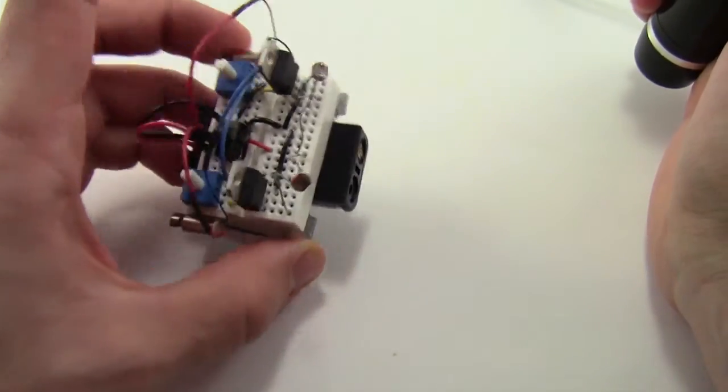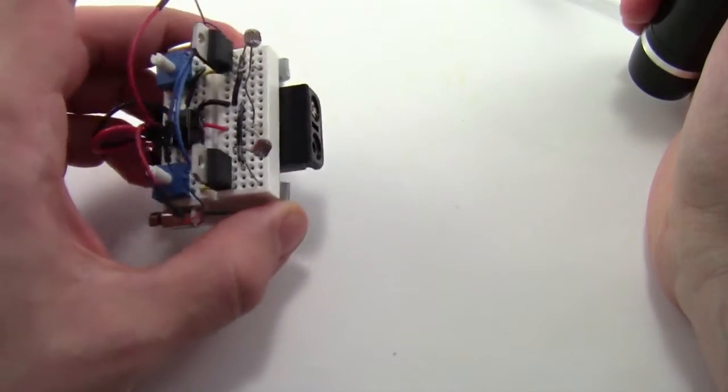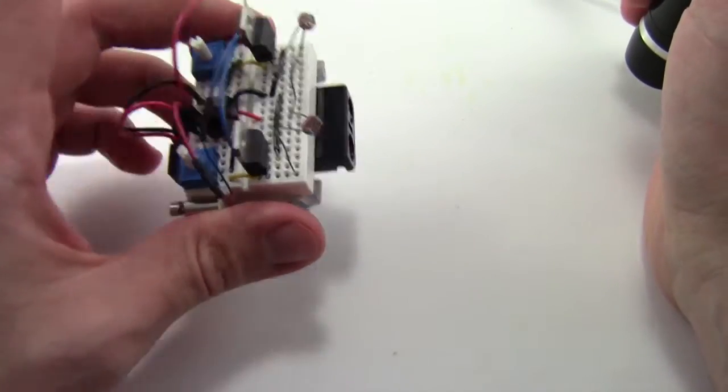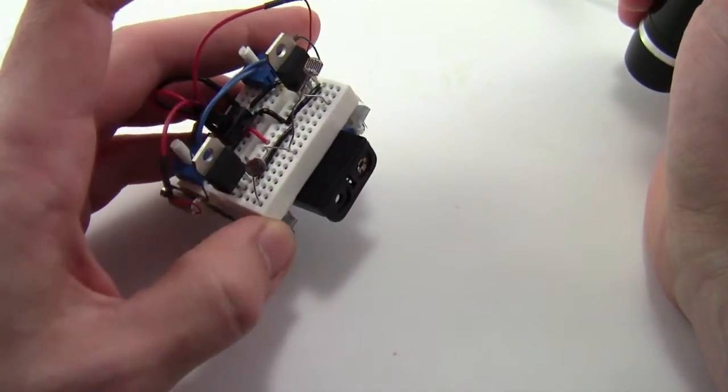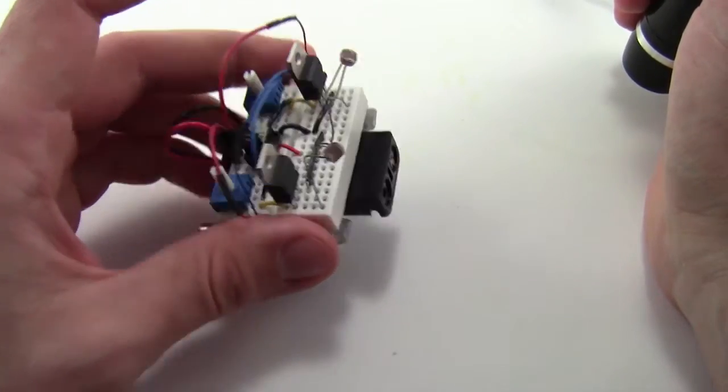So if your robot isn't behaving properly, if it's not turning or it's not going straight or it's just not working at all, there are a handful of common troubleshooting tips that we can look at and we will go over those next.